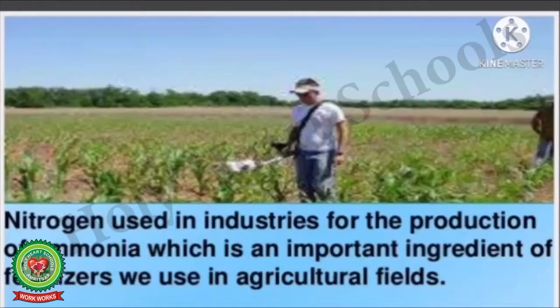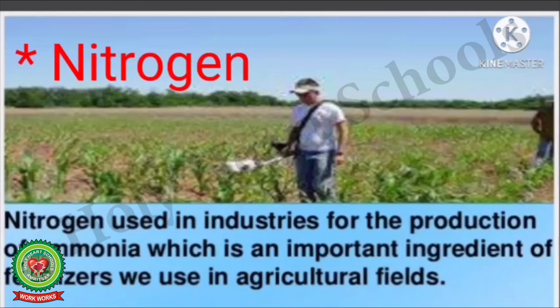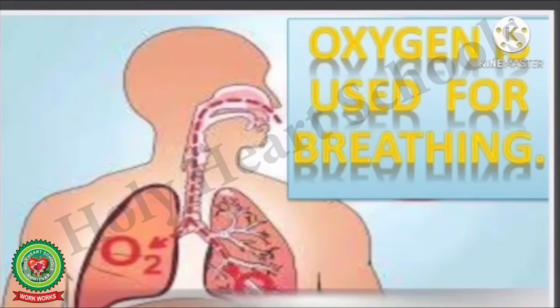Now we will discuss uses of non-metals. Nitrogen: Nitrogen is found to an extent of 70% in the atmosphere. Nitrogen is used in industries for the production of ammonia, which is an important ingredient of fertilizers used in agricultural fields.